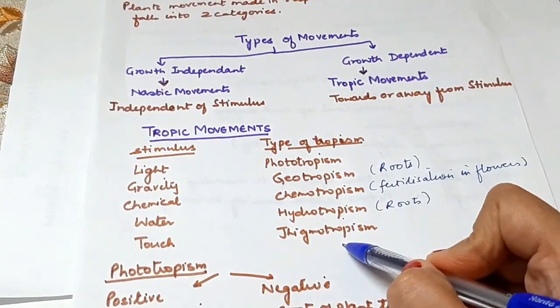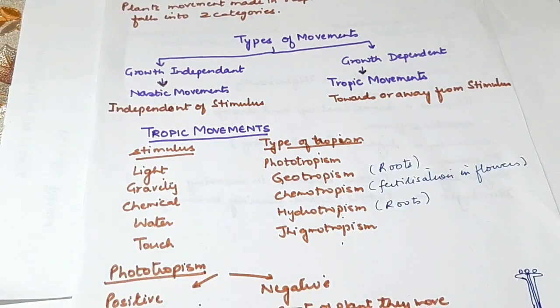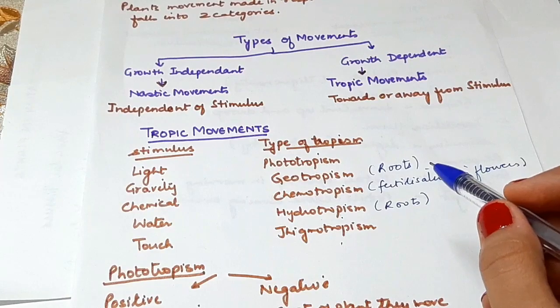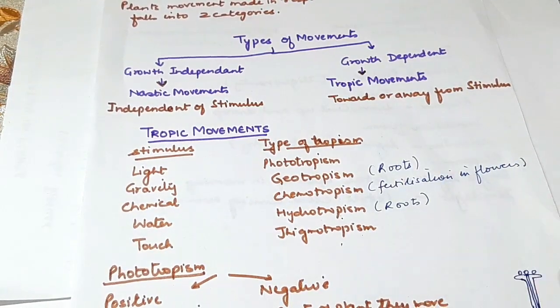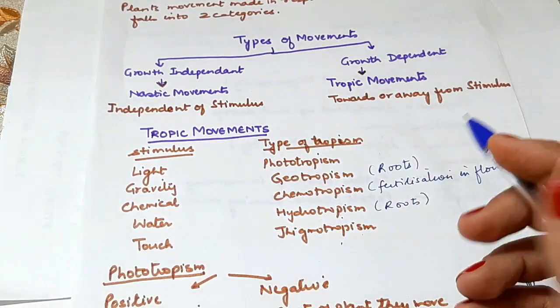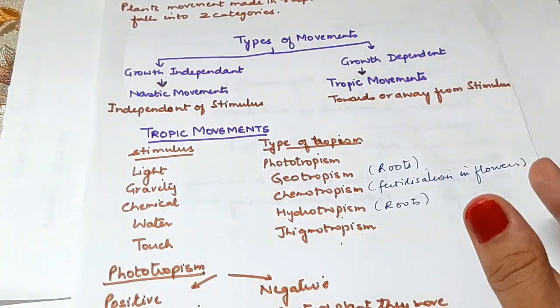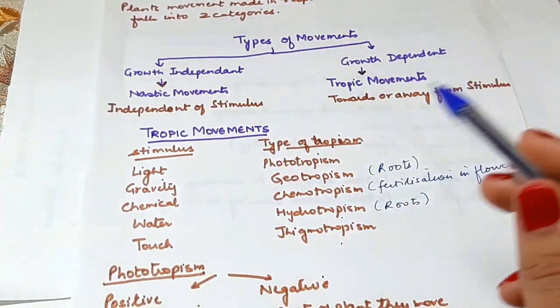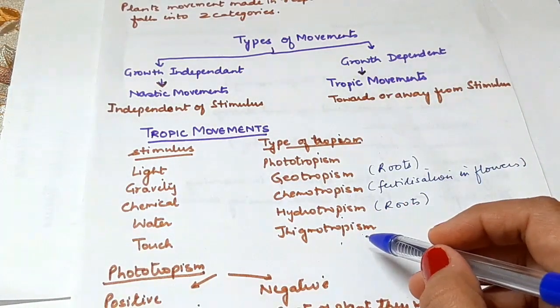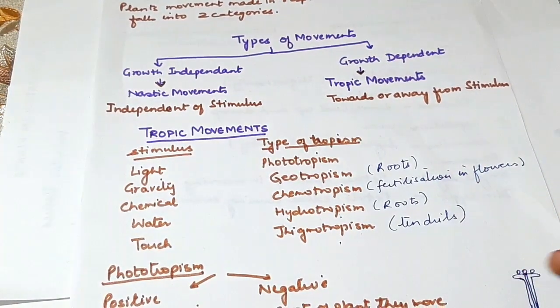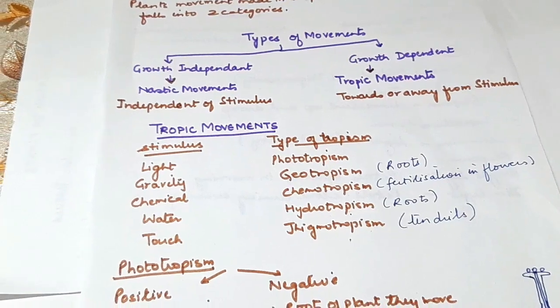Moving on to thigmotropism - in this case, climbing parts of plants such as tendrils grow towards any support. This happens because of touch. The tendrils will coil around the support. Tendrils are positively thigmotrophic.